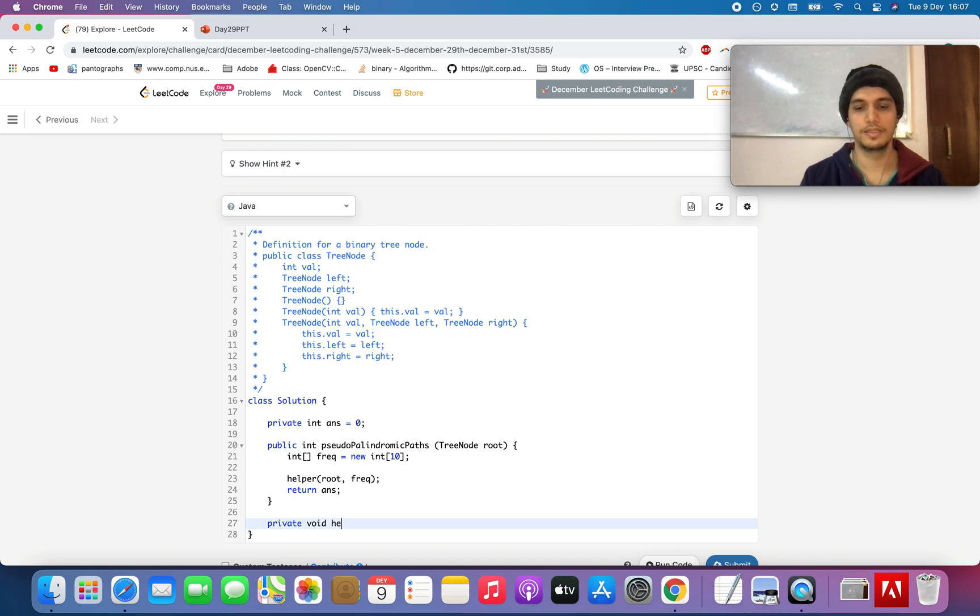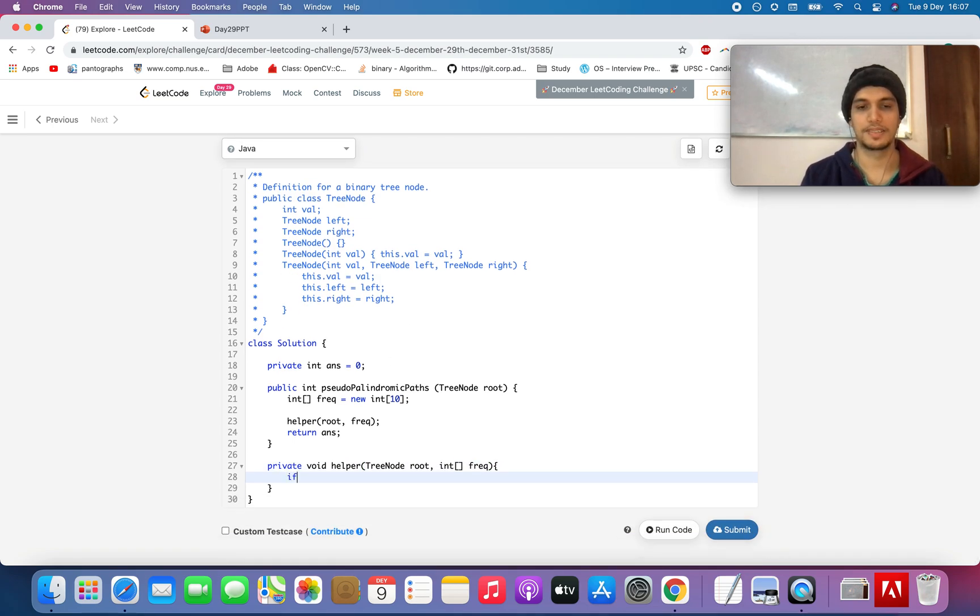So let's write private void helper, TreeNode root, and the frequency map. Let's write the code: if root is not null, we'll just continue with the process. We'll update the frequency of what is the value at the current node - root.val will increment its frequency.